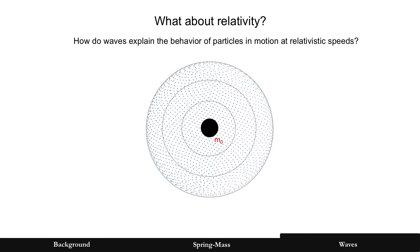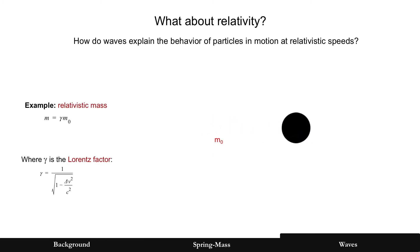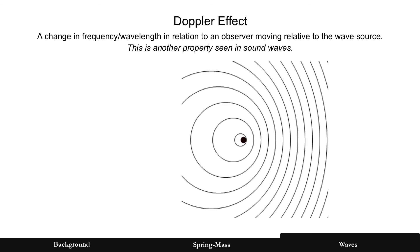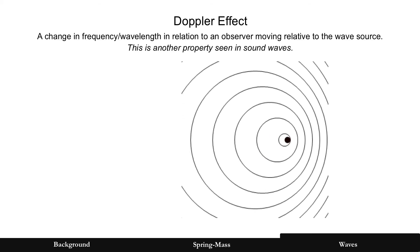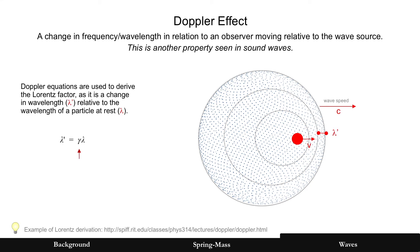All right, but what about relativity? How do waves explain the behavior of particles in motion at relativistic speeds? That's what it looks like for a relative mass, increasing in mass, and you see Lorentz factor there. Well, Doppler effect is the answer. A change in wavelength frequency in relation to an observer moving relative to the wave source, which is another property seen in sound waves. And this has actually been done by many who derive from the Doppler effect to get to the Lorentz factor, so I'm not going to reproduce it, but just one of the examples there is the URL below. That's how you go from waves to Lorentz factor, which is seen in relativity.